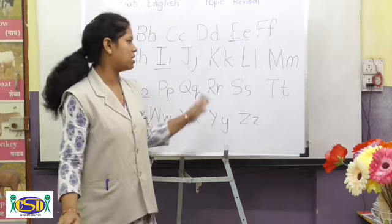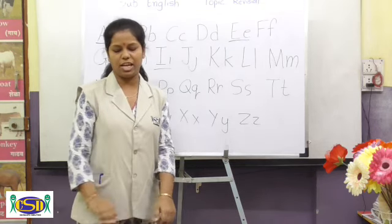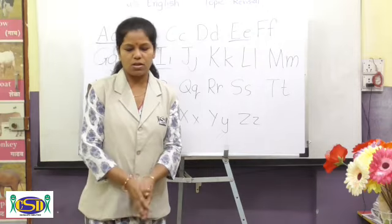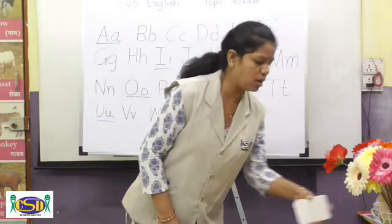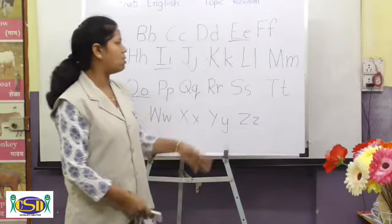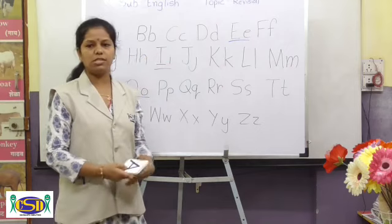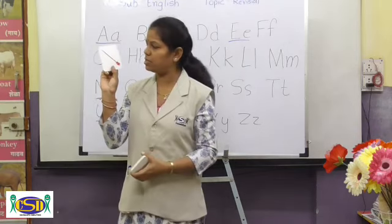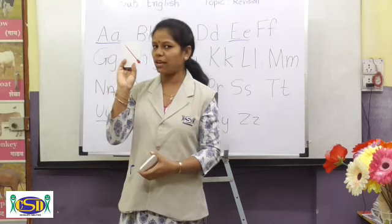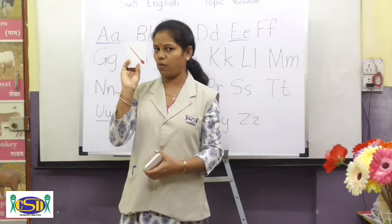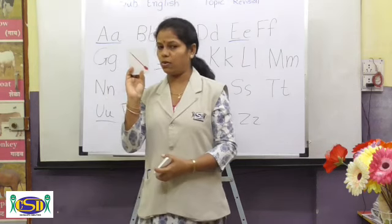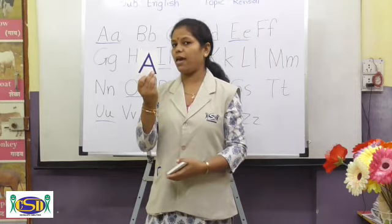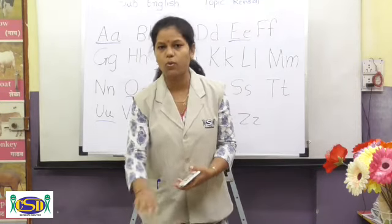Aapne mere saath gaya ki mi? Very good. Now let us see the words which start with the help of these letters. What is this picture? This is an Arrow. Very good. Arrow starts from which letter? A — A as in Arrow.